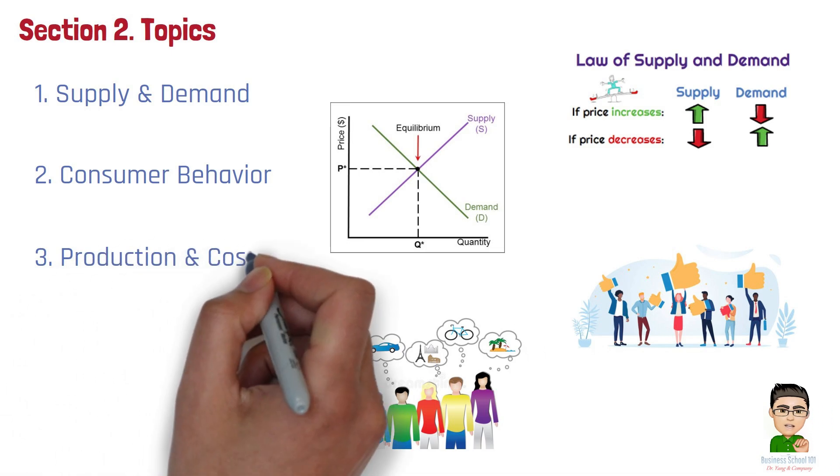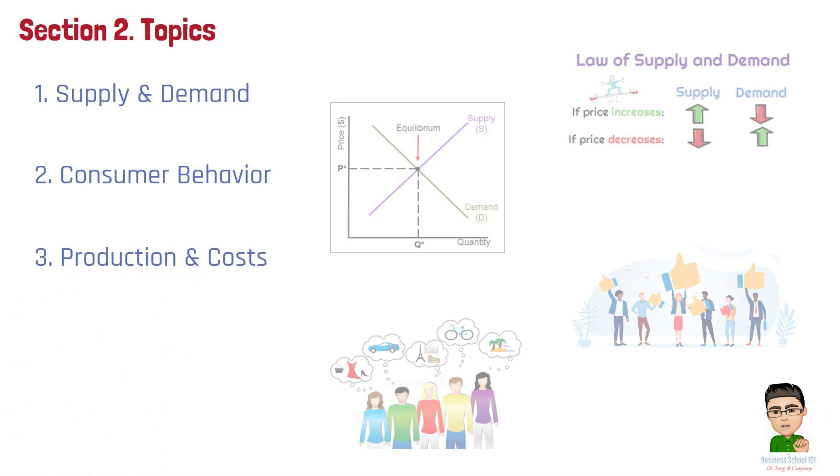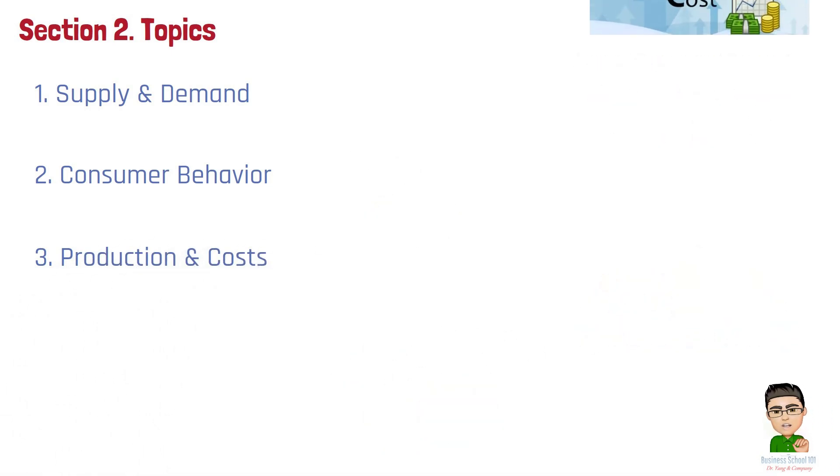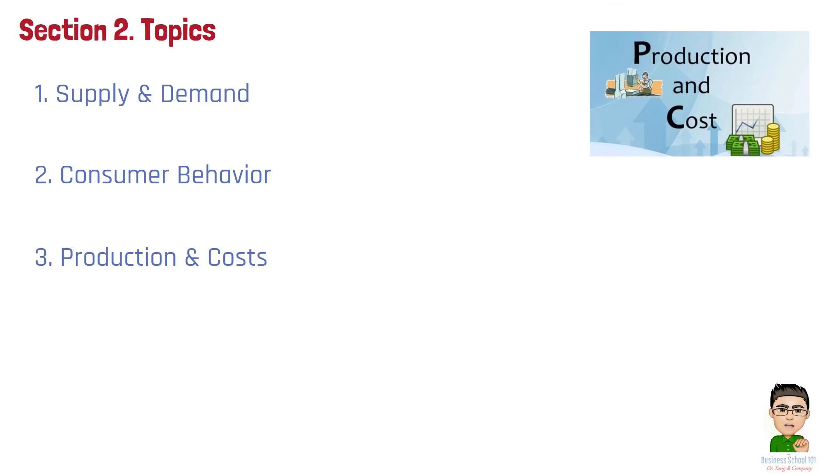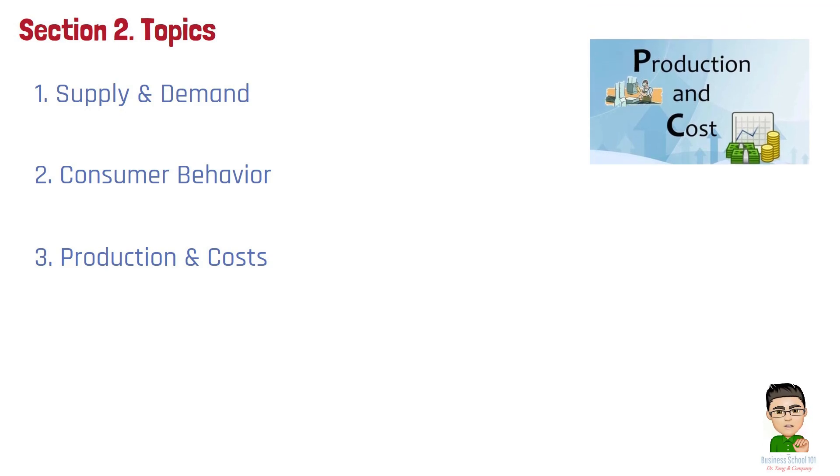Number 3. Production and Costs. Production and Costs focus on how firms combine inputs like labor and materials to produce goods and services efficiently. Understanding the relationship between fixed and variable costs helps firms determine the most cost-effective level of production, influencing their pricing and output decisions to maximize profit.